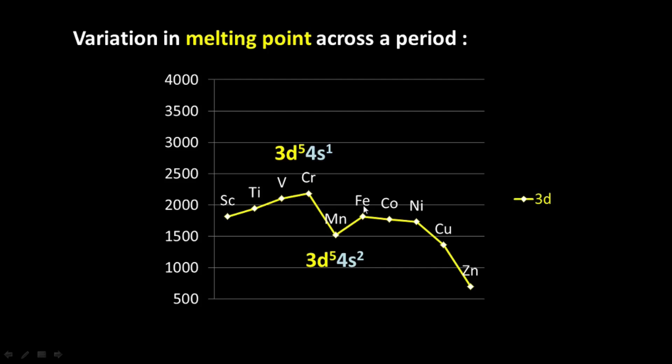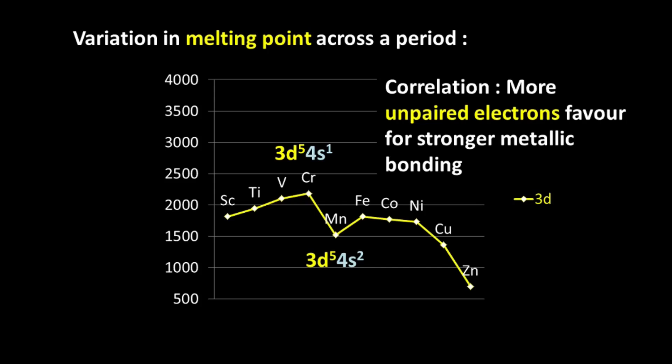It's actually maximum in manganese. And then electrons start getting paired up and then the number of unpaired electrons keeps decreasing again. So therefore, there is this interesting co-relationship between number of unpaired electrons and melting point. And you can say that metals having more unpaired electrons favor stronger metallic bonding. Of course, manganese is an exception out here. But remember that correlation is not equal to causation. Nevertheless, it is an interesting trend.